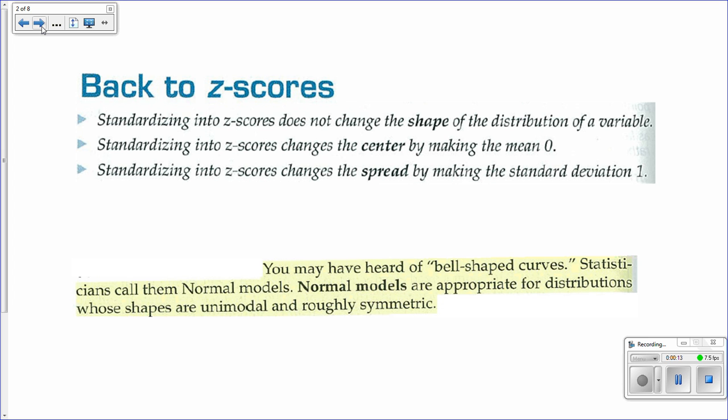You may have heard about bell-shaped curves in statistics. We will use them basically from here on out. It's a very common distribution that happens when things are happening randomly, because you have a lot in the middle and a few on each end.